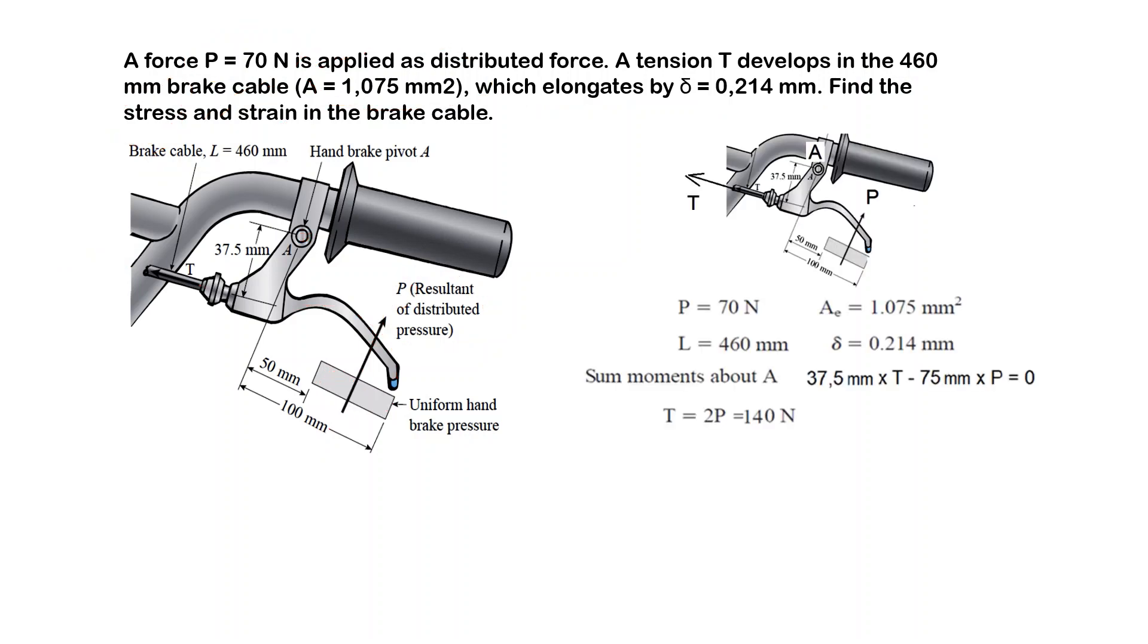The first thing we do is apply equilibrium to the brake handle. This is my support pin, and here I have a tension force trying to rotate like this. The moment arm is 37.5 mm.